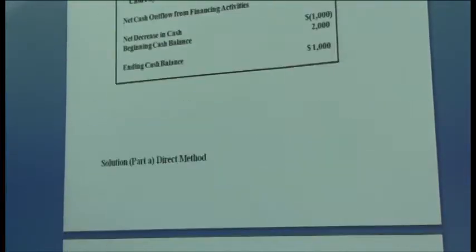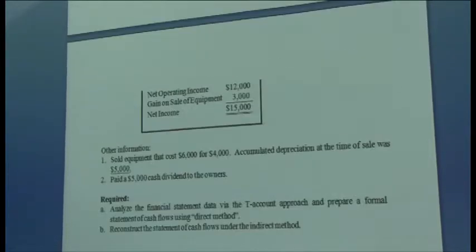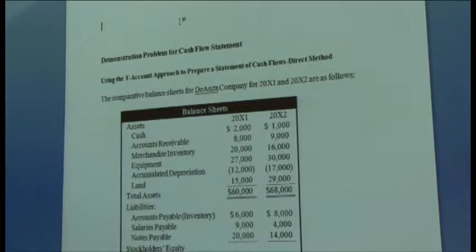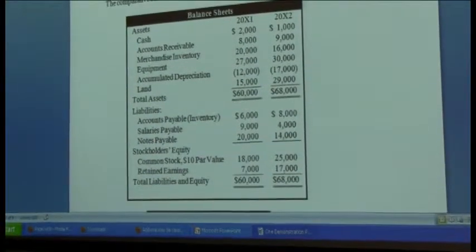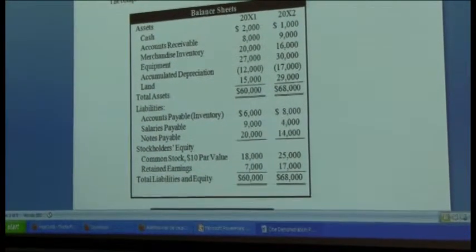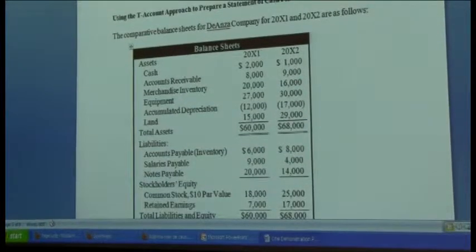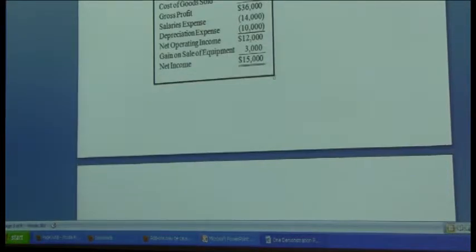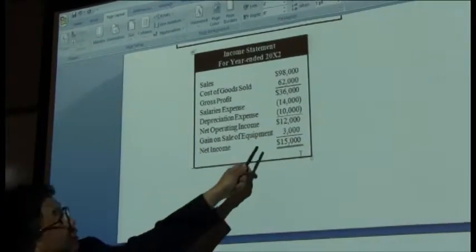What was the net income? $15,000. I have a handout, but I'm showing you — net income, bottom line, $15,000.